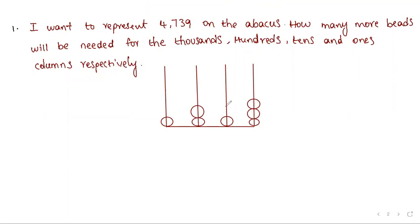Now, this is the abacus. I want to represent four thousand seven hundred and thirty-nine on the abacus. How many more beads will be needed for the thousands, hundreds, tens, and ones columns respectively?